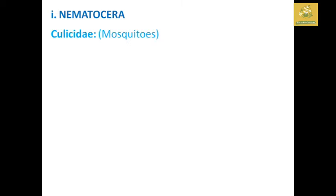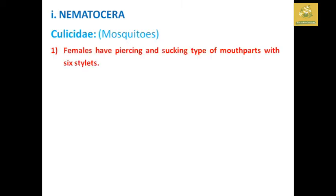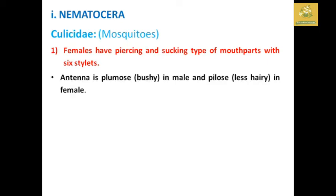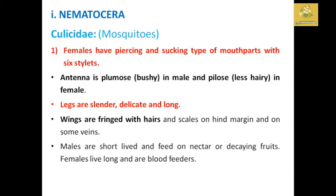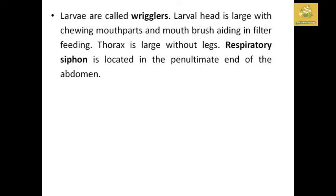Starting with the suborder Nematocera, the Culicidae family — mosquitoes. The female has a piercing and sucking type of mouthpart containing six stylets. The antenna is plumose (bushy) in males and pilose (with fewer hairs) in females. The legs are slender and long. Wings are fringed with hairs and scales on the hind margin and on some veins. Males are short-lived and feed on nectar or decaying fruits.